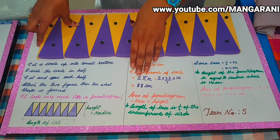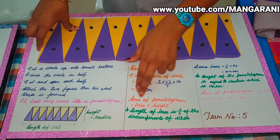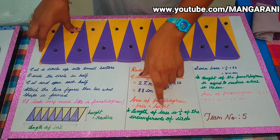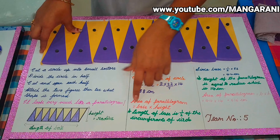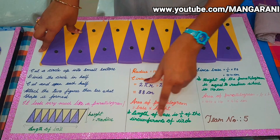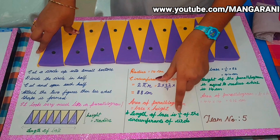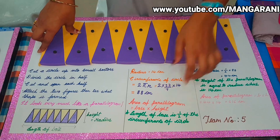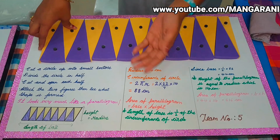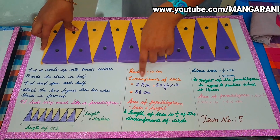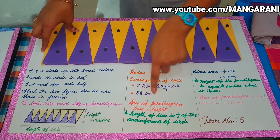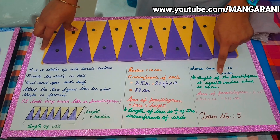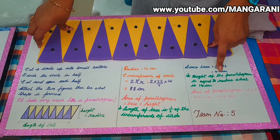There is an important hint for us: the area of a parallelogram is equal to base into height. Step 2: The length of the base is half of the circumference of the circle. We found that the circumference is 88 cm, so half of 88 cm is 44 cm.